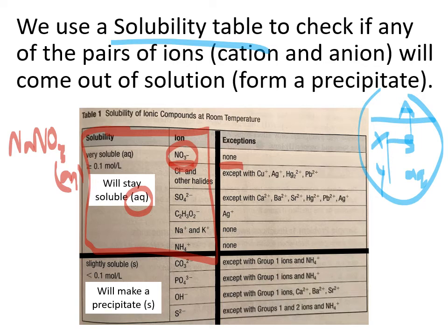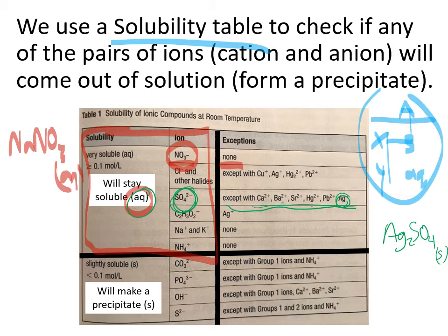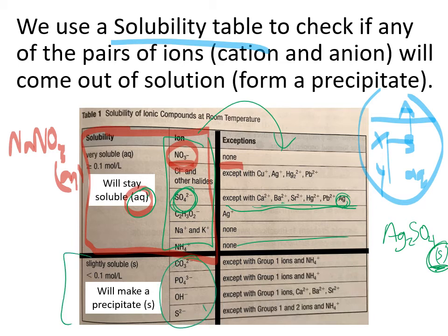Let's look at sulfate. Most sulfates are aqueous, but there are some exceptions. For example, silver sulfate is going to be a solid. You can see that sulfate tends to be aqueous except with these: calcium sulfate, barium sulfate, strontium sulfate, mercury sulfate, lead sulfate, and silver sulfate — all would be solid, not aqueous. They are more attracted to each other than to water, so they come out of solution. We can use this table to identify things that are soluble except for those exceptions, and also the ones that are very insoluble but have exceptions.